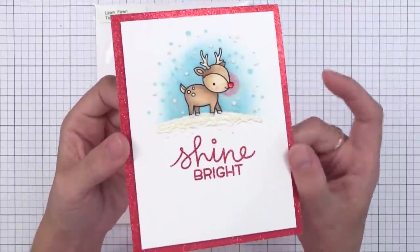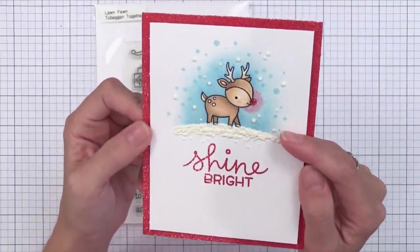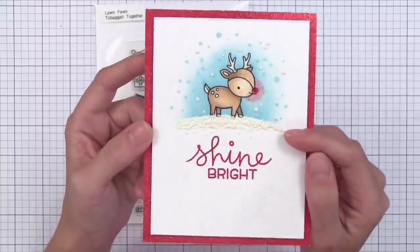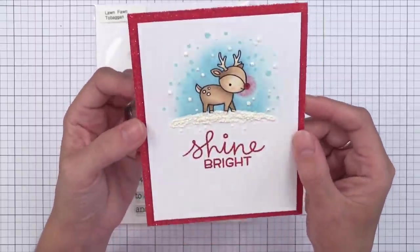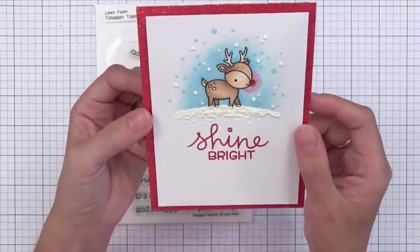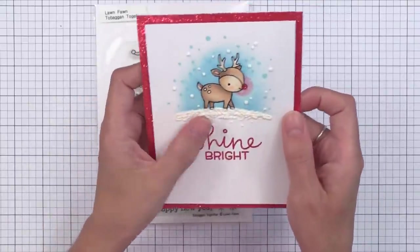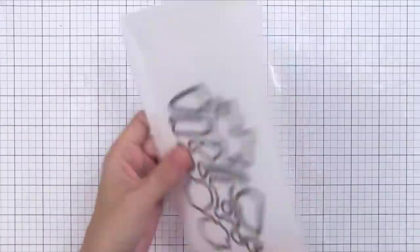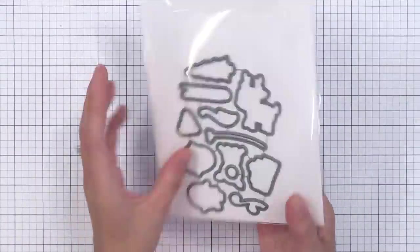Here's a card I made using the little reindeer from the set. I'll have a video showing how I created this card in a few days. You'll see I even gave the reindeer a glowing nose. My guess is that this will be the most popular set in this release. And as always Lawn Fawn is really good about making matching die sets available for their stamp sets.